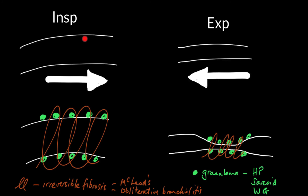During normal inspiration the bronchial tree dilates to allow air into the alveolar ducts and alveolar sacs, and during expiration the normal physiology is that the bronchus constricts. This is further exacerbated in asthma, where mucosal oedema causes wall thickening and the patients often get a wheeze. In the same way, if you have irreversible fibrosis or granulomatous disease in the wall of the bronchus, during inspiration the airways open normally, but during expiration the bronchial constriction is further exacerbated by damage to the wall, whether temporary or permanent.